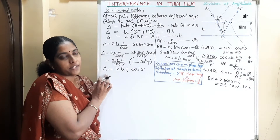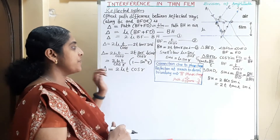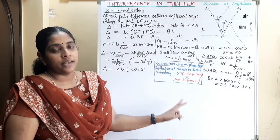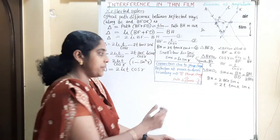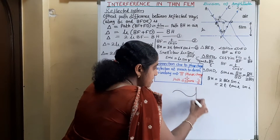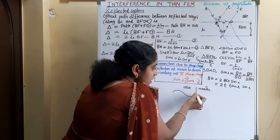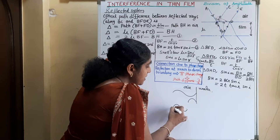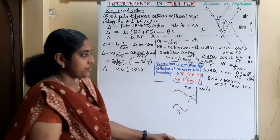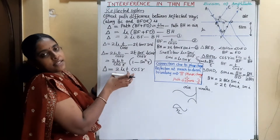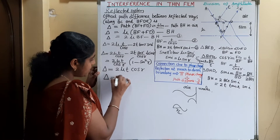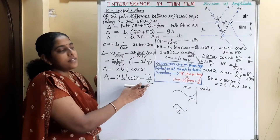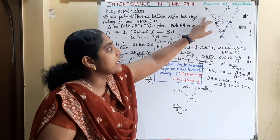A correction is required in this expression because of a phase change. If reflection occurs at a rarer-to-denser boundary, it corresponds to a phase change of pi. This phase change of pi corresponds to a path difference of lambda by 2. So we have to include this correction in our expression. The corrected path difference is written as 2μT cos R minus lambda/2, where the lambda/2 term is due to the phase change of pi at the rarer-to-denser boundary.